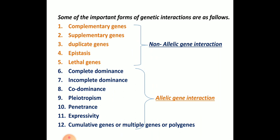Complementary genes, supplementary genes, duplicate genes, epistasis and lethal genes all come under non-allelic gene interaction. Whereas complete dominance, incomplete dominance, co-dominance, pleiotrophism, penetrance, expressivity, and cumulative genes or polygenes come under allelic gene interaction.